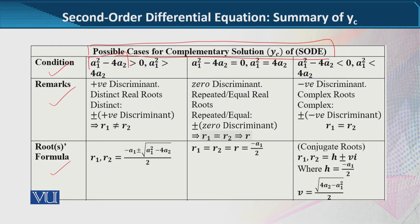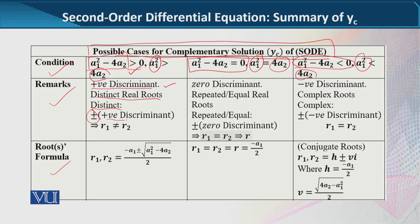Distinct real root case کی condition یہ تھی کہ discriminant positive ہوتا ہے — اس کا مطلب پہلی term دوسری سے بڑھی. اور distinct ہم انہیں اس لئے کہتے ہیں کیونکہ plus minus کی وجہ سے، جو کہ positive discriminant کے ساتھ جمع اور نفی کیا جاتا ہے، اس سے دو roots بنتے ہیں جو definitely ایک جیسے نہیں ہوتے.